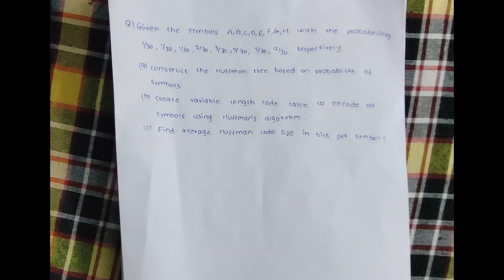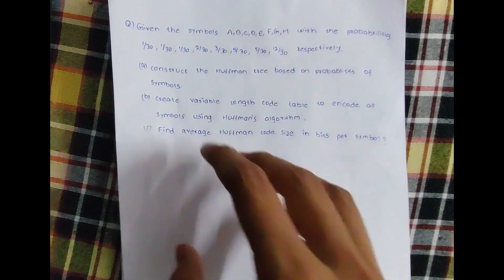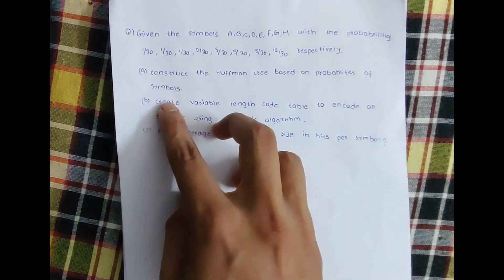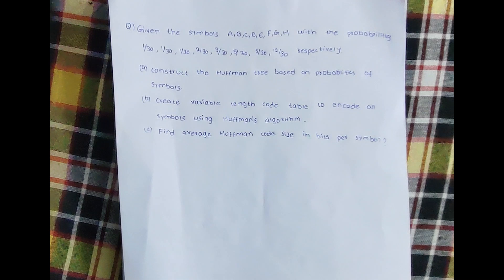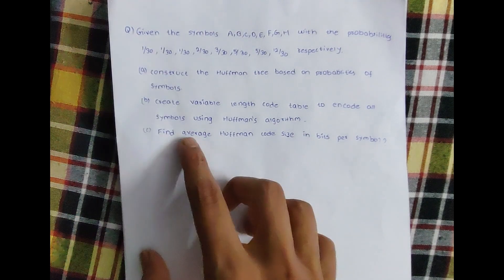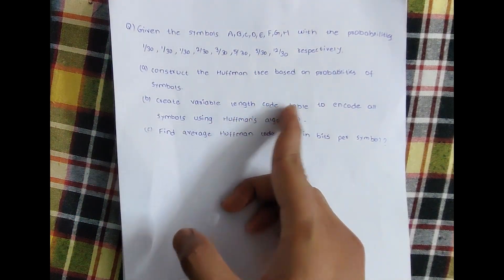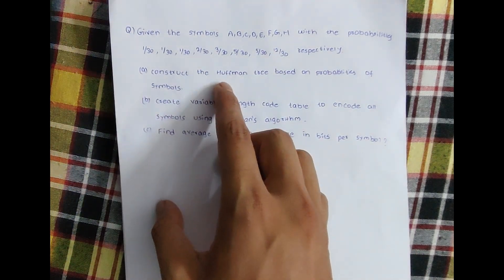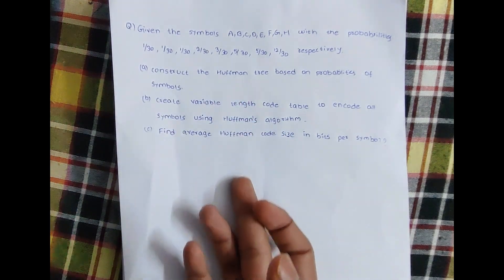There are three parts to this question. The first part is to construct the Huffman tree based on probabilities of symbols. The steps were covered in a previous video. The second part is to create a variable length code table to encode all symbols using Huffman's algorithm. Once the Huffman tree is constructed, the remaining two parts become straightforward.